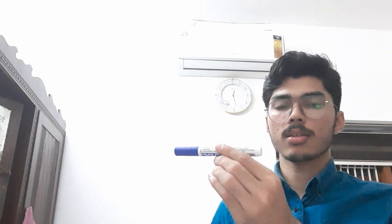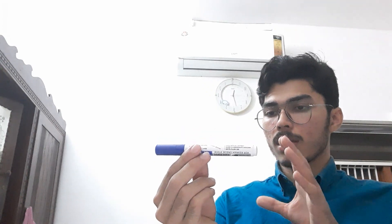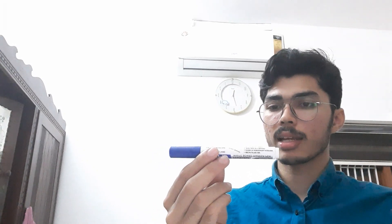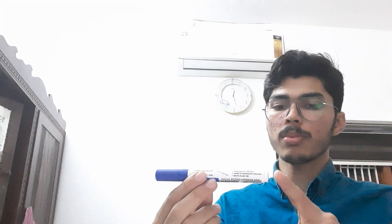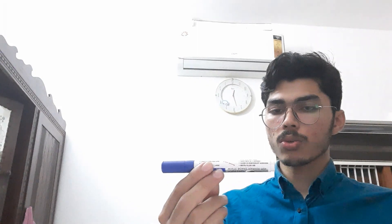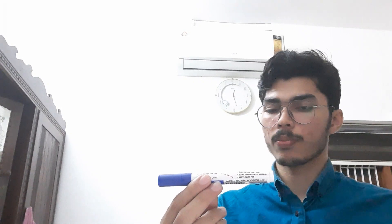Pseudomonas is a gram-negative bacilli. On gram staining it appears as a gram-negative organism. It has a flagella arising from one pole, so it is monotrichous, meaning it has a monotrichous flagella.